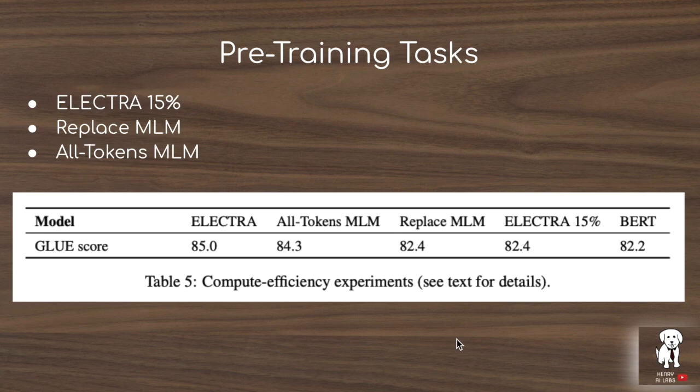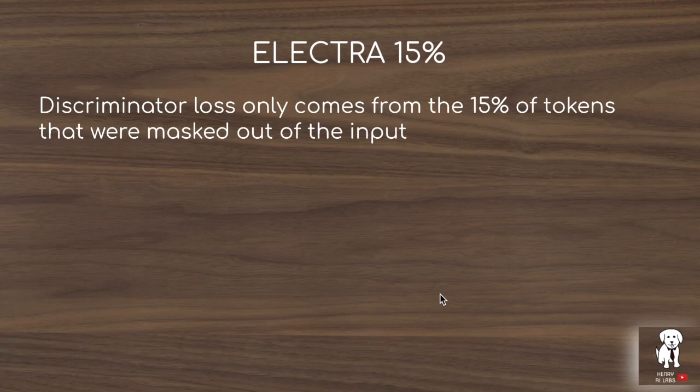To isolate the factors behind ELECTRA's compute efficiency gains compared to masked language modeling in BERT — specifically defining the output loss over the entire sequence and eliminating the train-test mask token discrepancy — the authors define three pre-training tasks as an ablation study: ELECTRA-15%, where the ELECTRA loss is applied to only 15% of tokens; Replace-MLM; and All-Tokens-MLM. ELECTRA-15% is similar to BERT's masked language modeling in that the loss is defined only on the 15% of originally masked tokens.